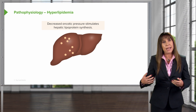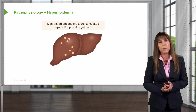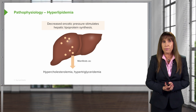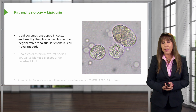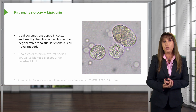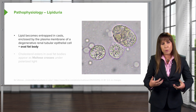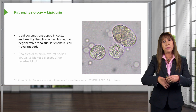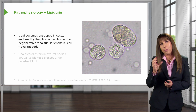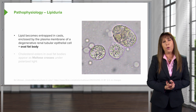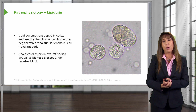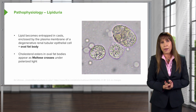Finally, we have hyperlipidemia. That decrease in oncotic pressure also stimulates hepatic lipoprotein synthesis, so the liver produces a lot of lipid, manifesting as hypercholesterolemia or hypertriglyceridemia. We can also see lipiduria, where lipid becomes entrapped in cellular casts in the urine, also seen in the plasma membrane of degenerated tubular epithelial cells. As proximal tubular epithelial cells try to absorb as much as possible, sometimes they detach from the underlying basement membrane, become engorged with lipid, and turn into oval fat bodies — which appear brownish with refractile elements. If you have a polarizer on your microscope, these can show Maltese crosses where those lipid elements are. They're actually fun to look at underneath the microscope.